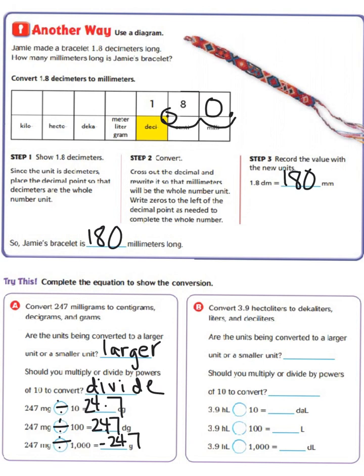Now we're going to convert 3 and 9 tenths hectoliters to decaliters, liters and deciliters. So are the units being converted to a larger unit or a smaller unit? That's going to be a smaller unit. Should you multiply or divide by powers of 10 to convert? Well since we're going from larger to smaller we're going to multiply.